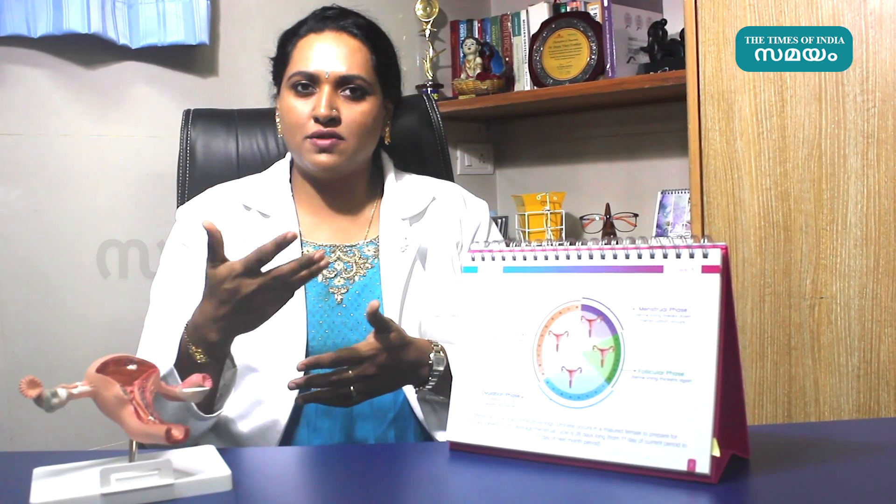After 35 to 40 years, if irregular periods are ignored, it affects the uterus — the uterine lining becomes thick. Over three years, the thickness causes cell changes. The cell structure and DNA change, and pre-cancerous cells develop. In women aged 45 to 55 years, this can lead to endometrial cancer. If you go to the doctor, you can take medication for two months along with lifestyle changes to prevent this.